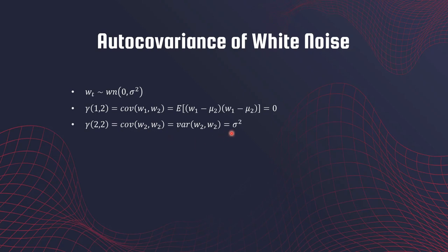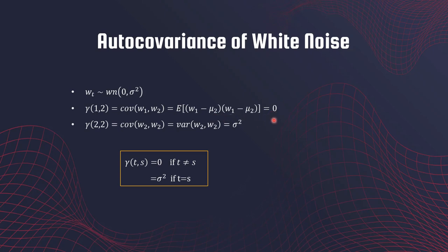Note that the variance at all time points is the same for white noise. We can combine these observations and write the covariance function in a compact fashion: γ(t,s) = 0 if the time points are different, and γ(t,s) = σ² if the time points are the same.